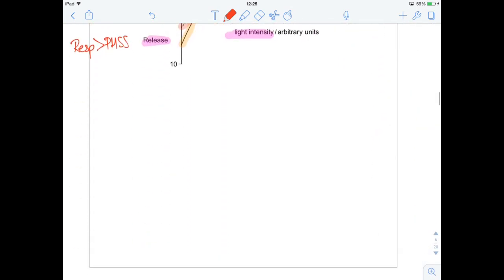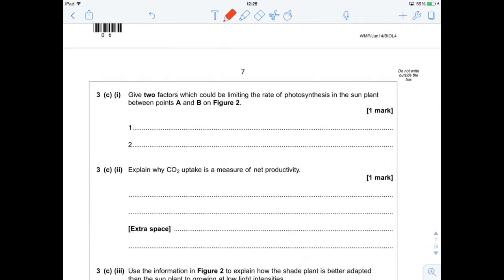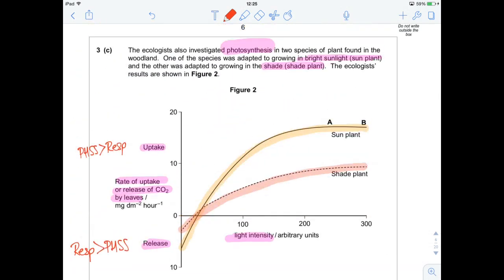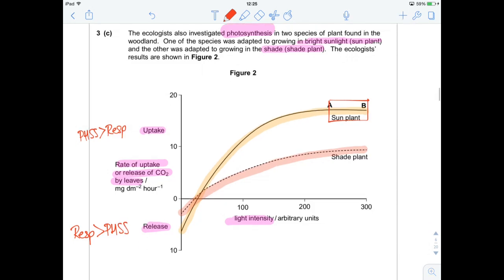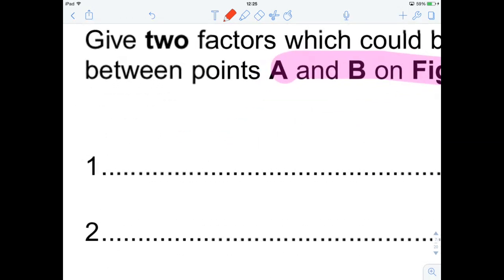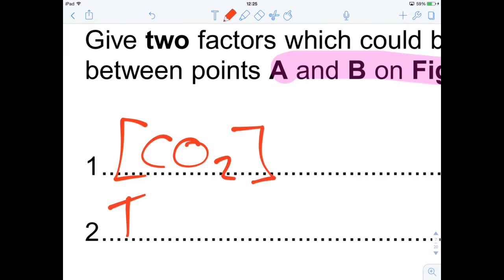So, let's take this to the question. Give two factors which could be limiting the rate of photosynthesis in the sun plant between A and B on figure 2. So, where are we between A and B? This area here. Well, it's not light intensity because we're keeping increasing the light intensity. So what are the other two factors that limit photosynthesis? Well, it's carbon dioxide concentration and temperature. This is GCSE stuff, so a real nice gift of a question here.